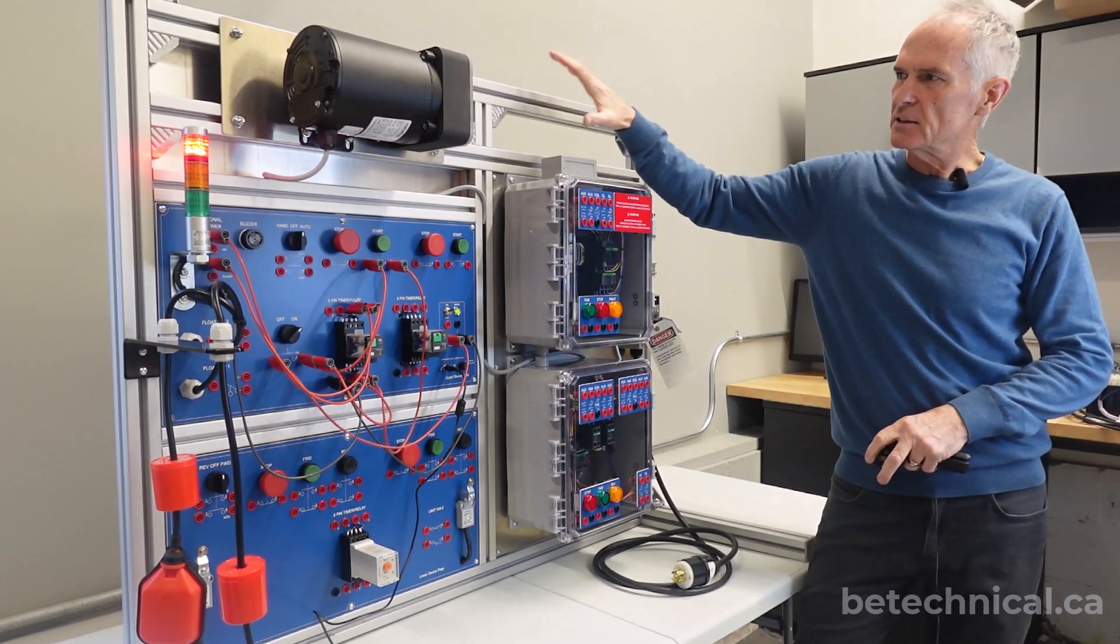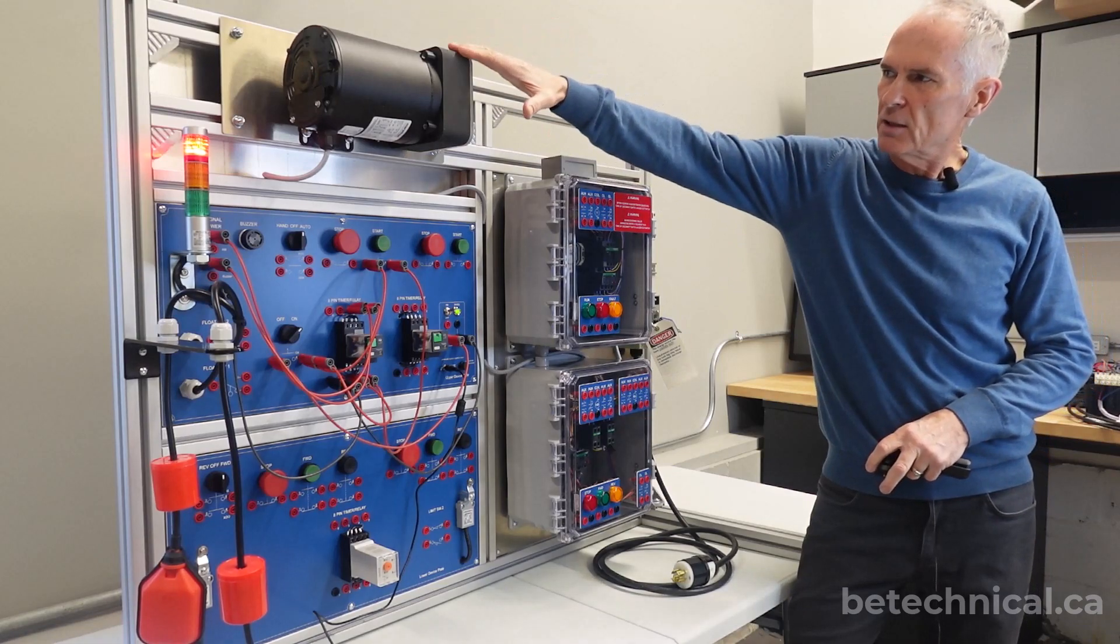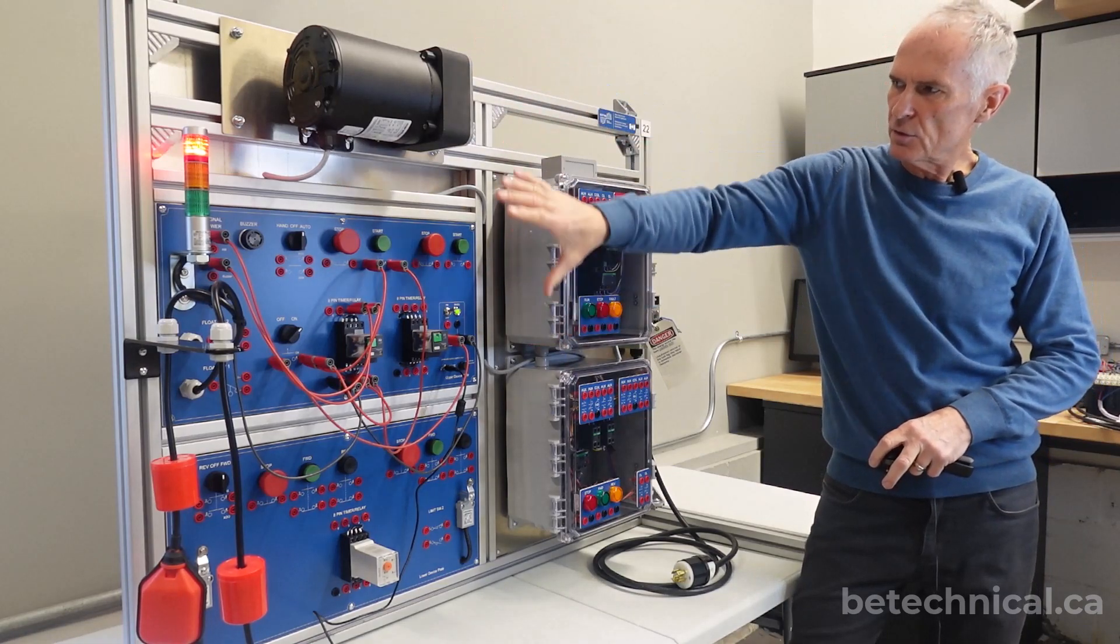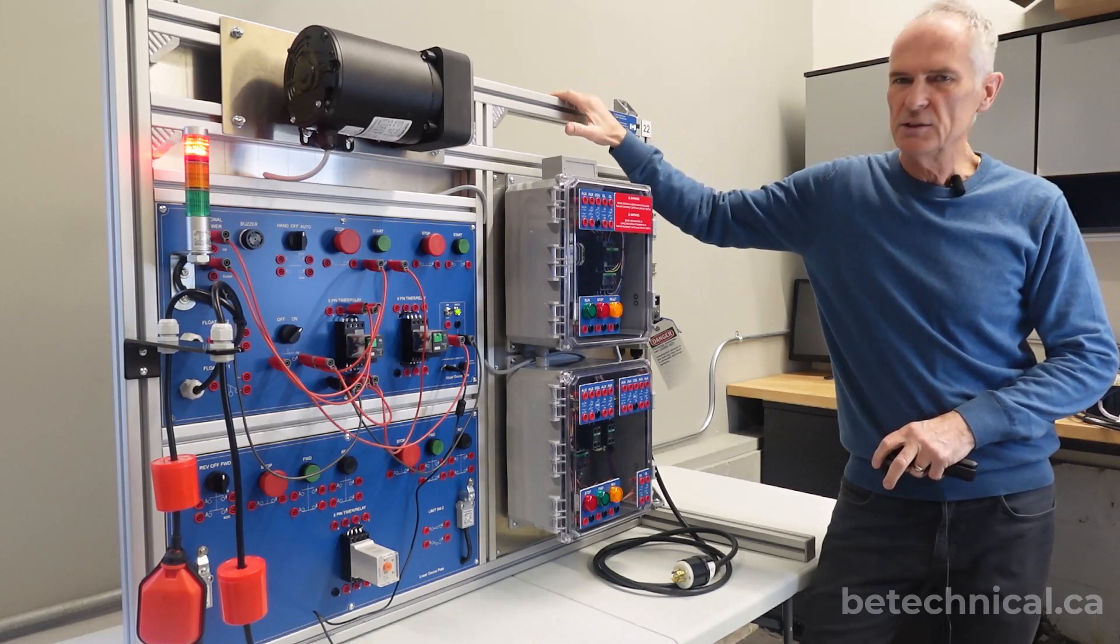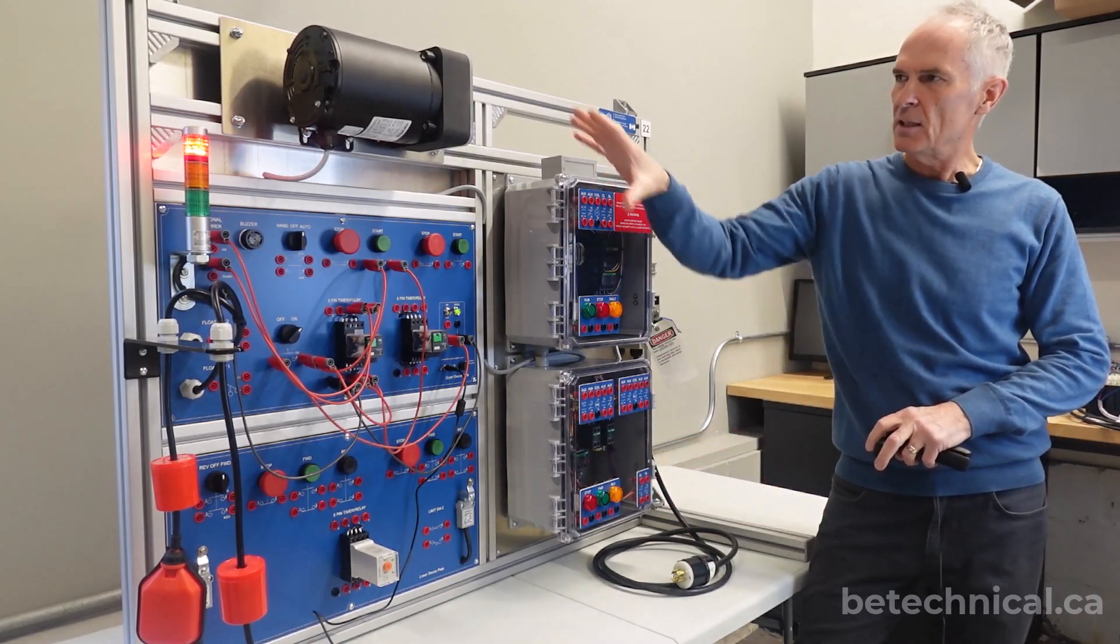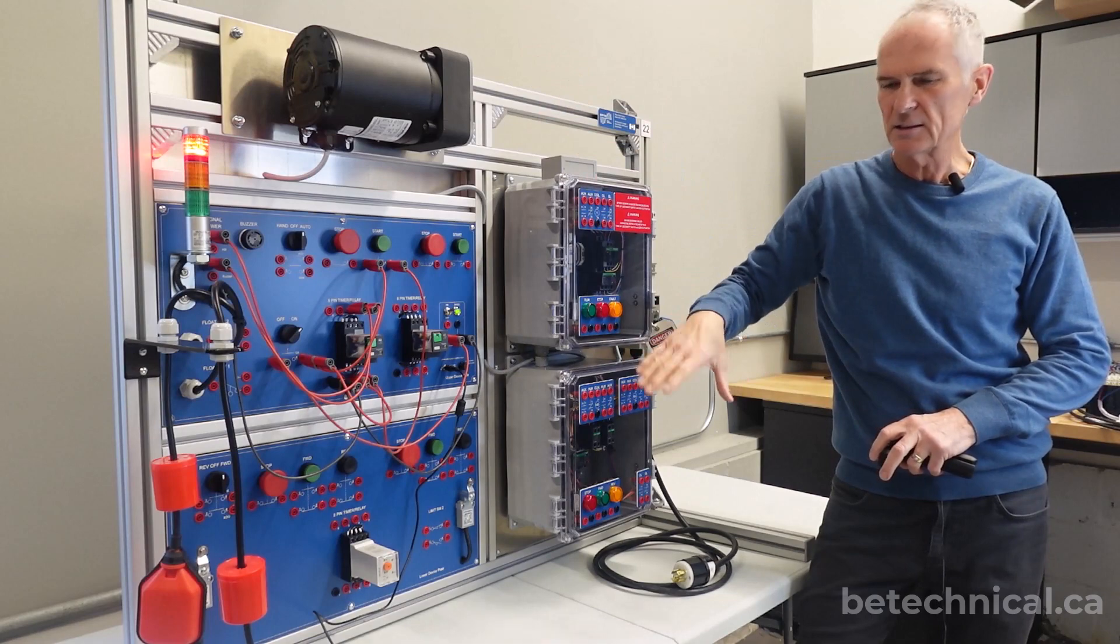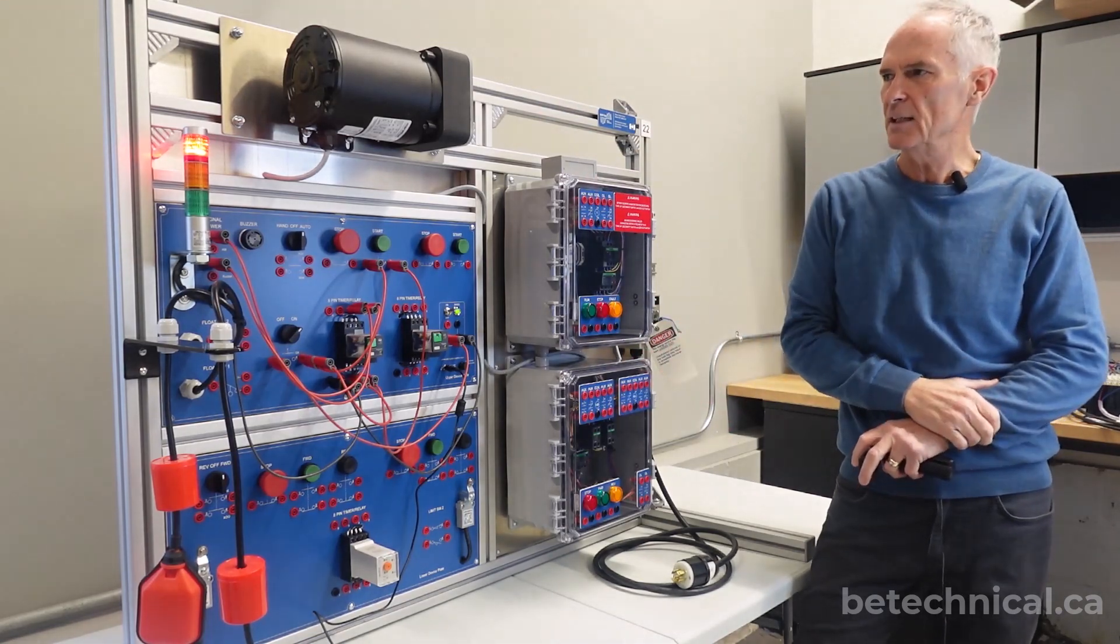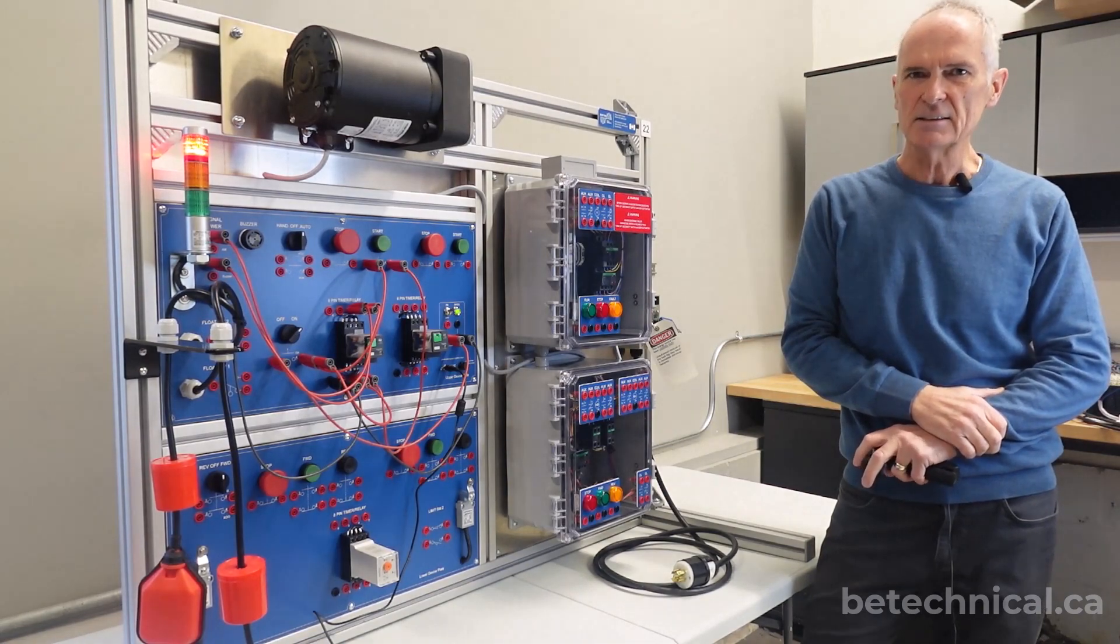This particular unit is designed to mount on a wall. You'll notice that the motor is mounted above the control section in this case. Typically we supply these units on a rolling frame and the motor is mounted down in front of the starters. Mounting the motor up above the control section provides some extra space when you really need it in the institutional environment.